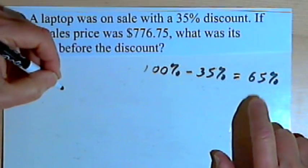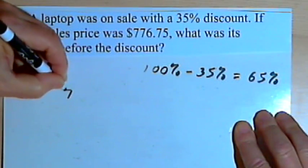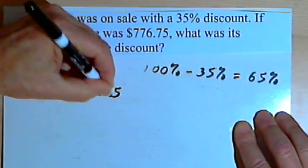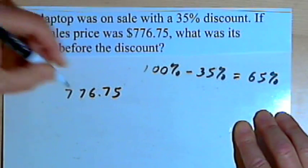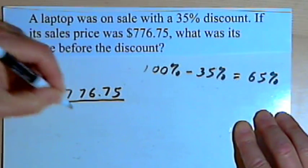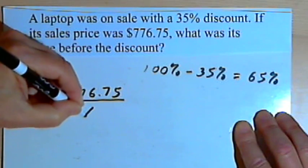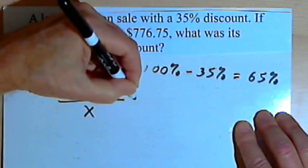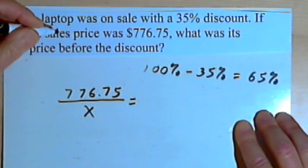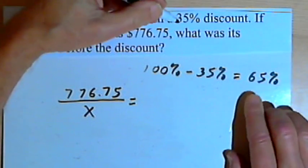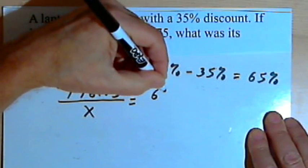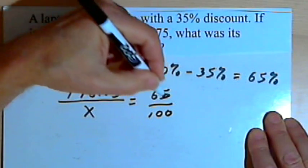So for the fractions we're going to have here, I'm going to have $776.75 as the numerator of a fraction. The denominator is going to be the whole original price. We don't know what that is, that's x. We're going to set that equal to 65% written as a fraction. So that's 65 over 100.